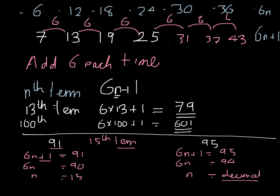Therefore, n, which had to be a whole number to be a term in the sequence, cannot be true. So 95 is not in our sequence. And that's it for the nth term.